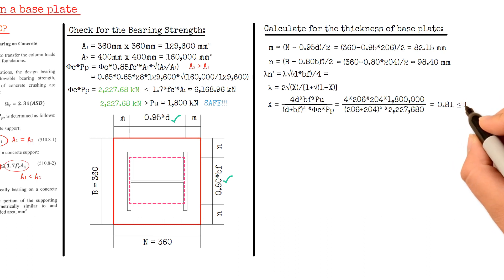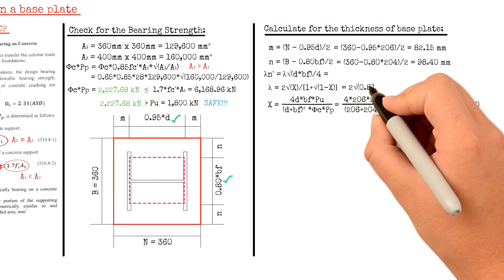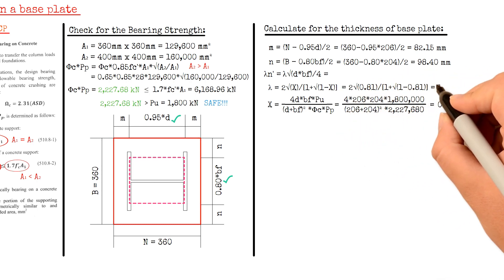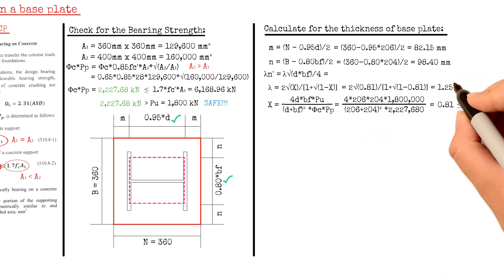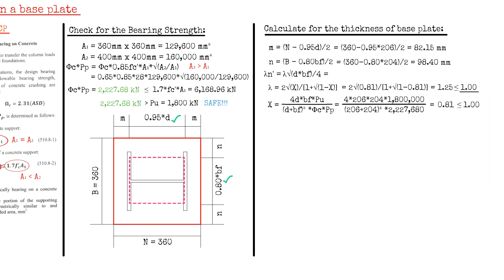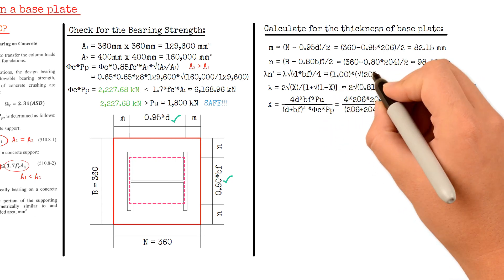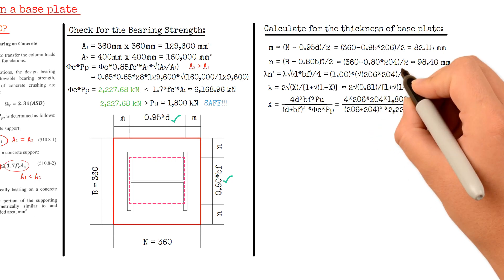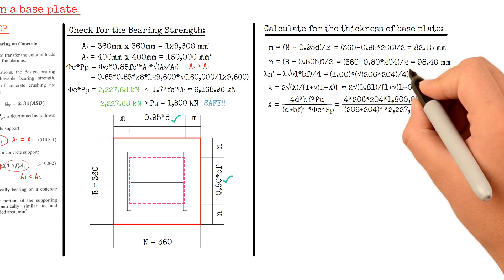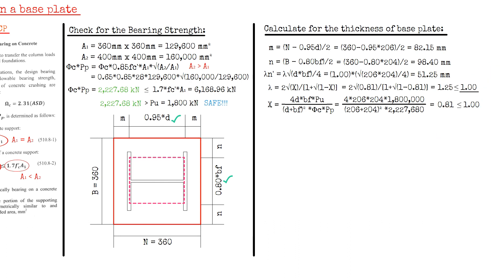Since x must be less than or equal to 1, the auxiliary variable gamma equals 1.25, but is capped at 1. Therefore, gamma × N' equals 1 × √(206 × 204) / 4, which equals 51.25 mm.